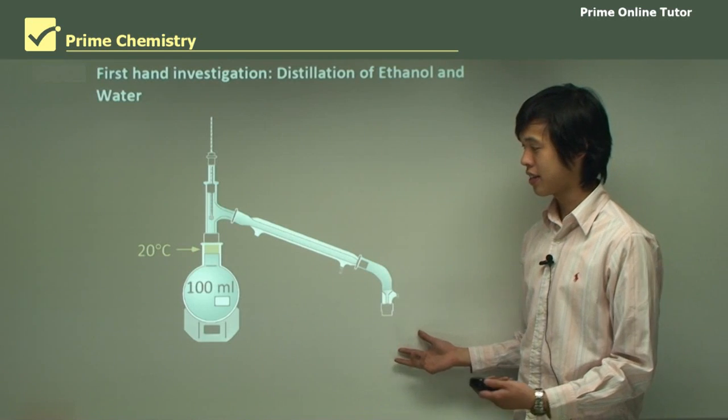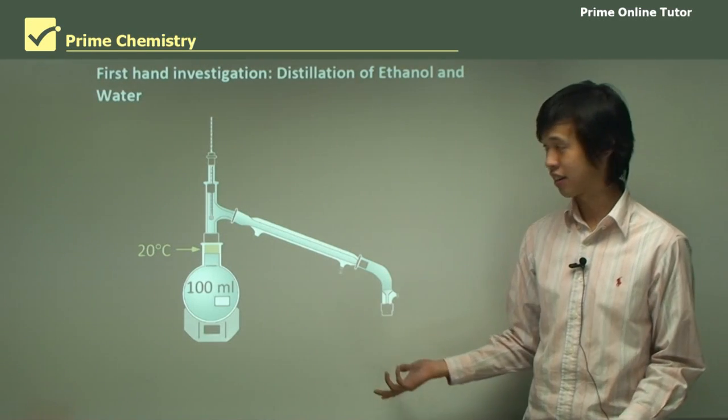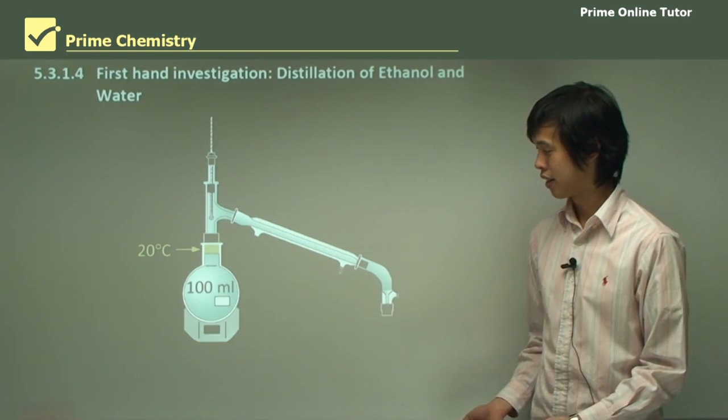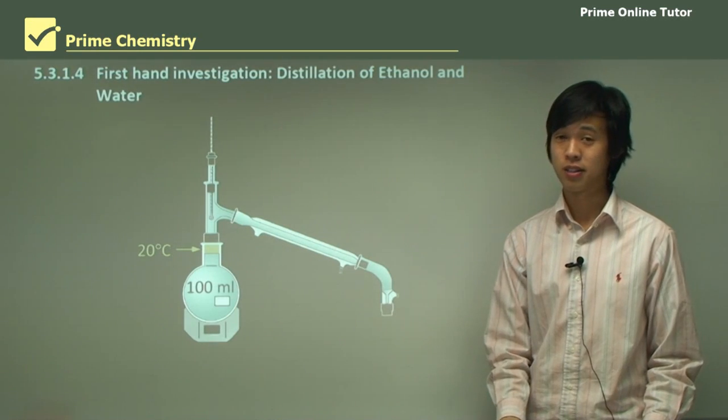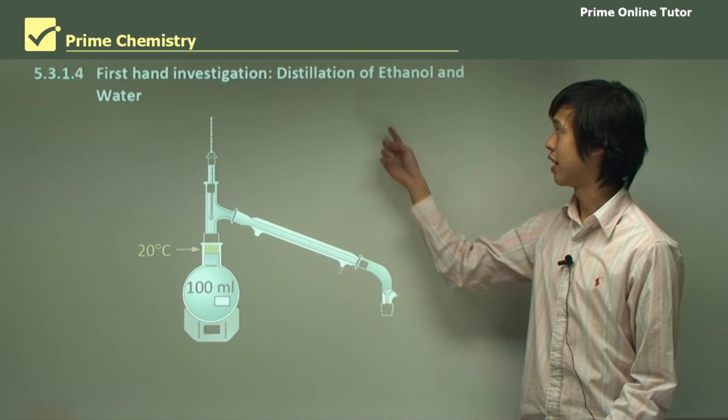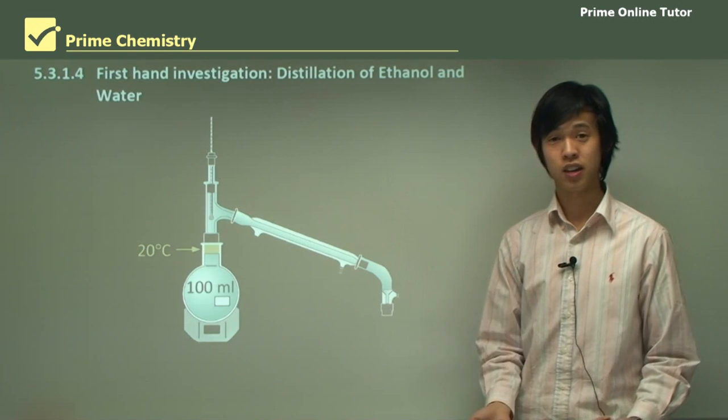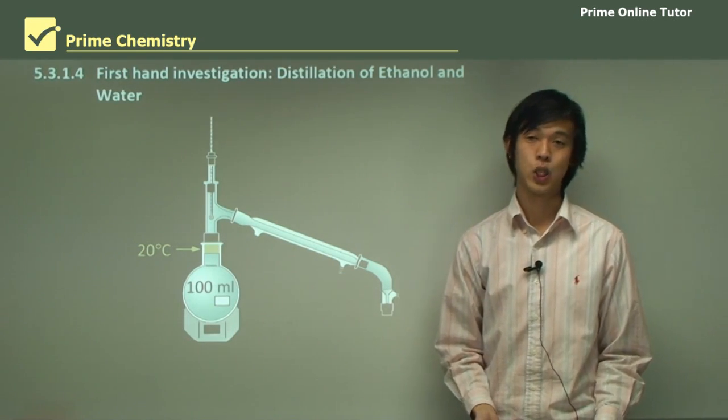So this is our standard apparatus, a distillation apparatus. And so we'll explain what each part is and how we're going to use it to separate ethanol and water, because that's quite an important process, even in industry.